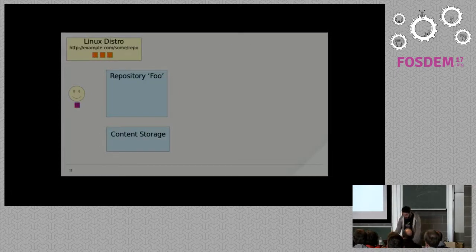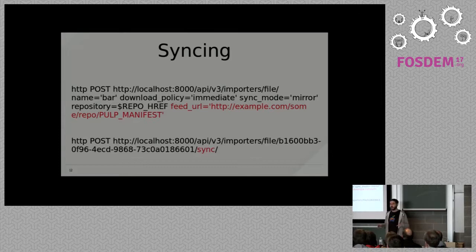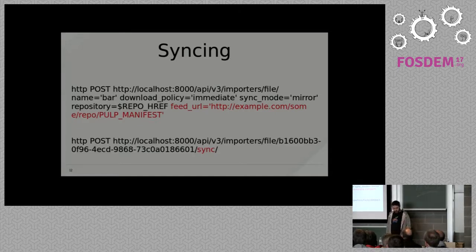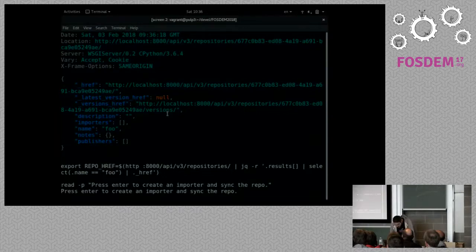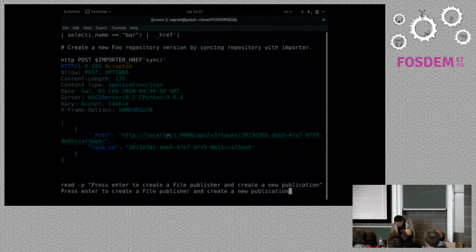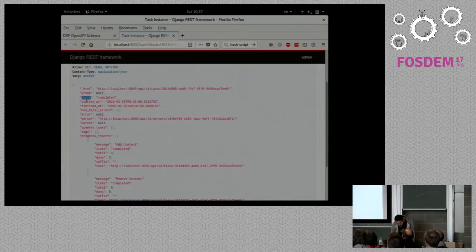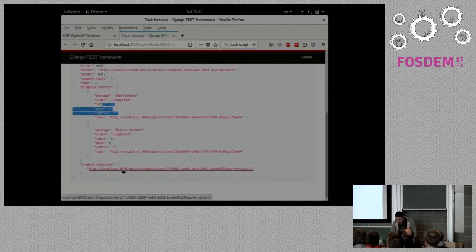Now we have a repository. Next we're going to sync that remote repository. To do that we first have to create an importer — the important part to notice is the feed URL, which is the URL the importer will use to discover and download content. After we create the importer we tell it to sync, and the sync will be an asynchronous task. This asynchronous task can be followed through the REST API — this is the browsable API thanks to Django REST Framework. We can see the task completed and three content units were added, creating a repository version.